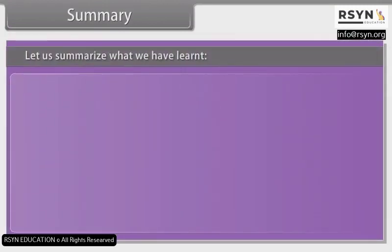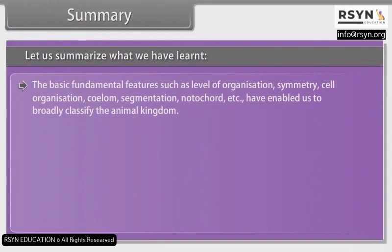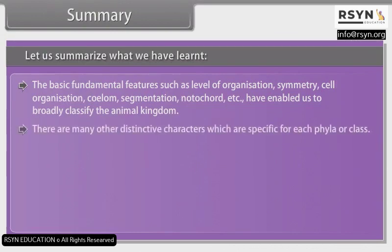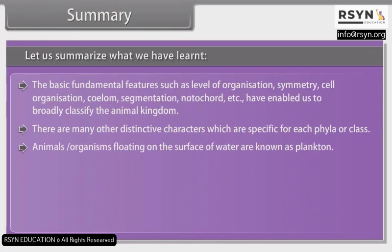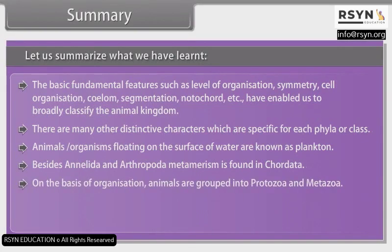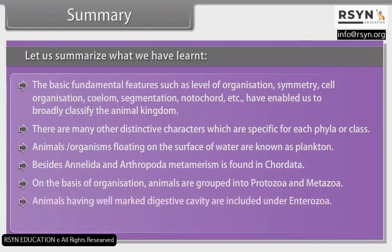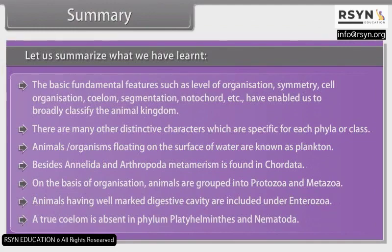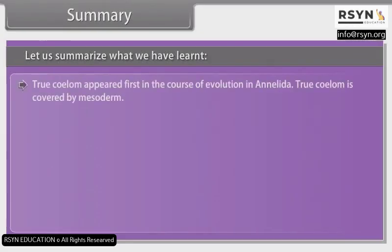Let us summarize what we have learned. The basic fundamental features such as level of organization, symmetry, cell organization, coelom segmentation, notochord, etc., have enabled us to broadly classify the animal kingdom. There are many other distinctive characters which are specific for each phyla or class. Animals or organisms floating on the surface of water are known as plankton. Besides annelida and arthropoda, metamerism is found in chordata. On the basis of organization, animals are grouped into protozoa and metazoa. Animals having well-marked digestive cavity are included under enterozoa. A true coelom is absent in phylum platyhelminthes and nematoda. True coelom appeared first in the course of evolution in annelida.